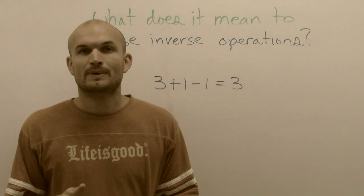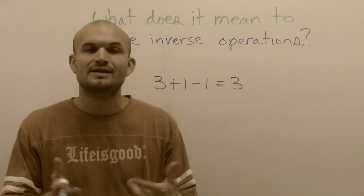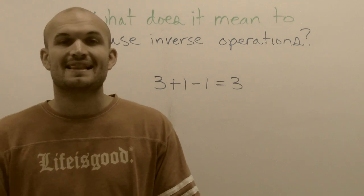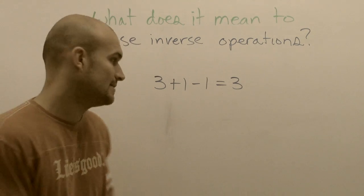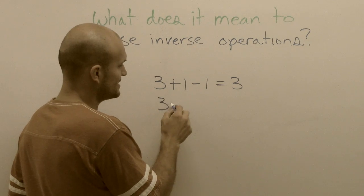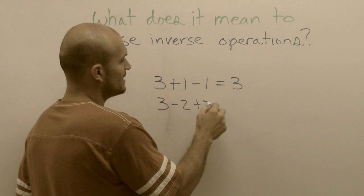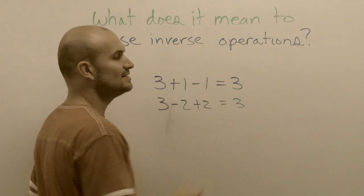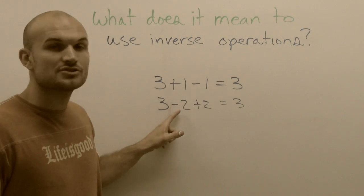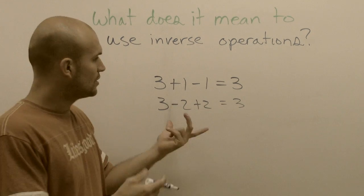The addition and subtraction are what we call inverse operations. The reason why they're called inverse operations is they undo one another. I could have done this the other way: if I subtract two and then add two, I'm still going to get to three. Three minus two is one, one plus two is back to three.